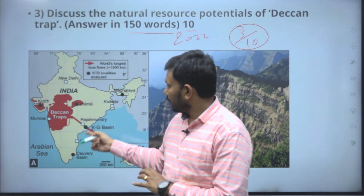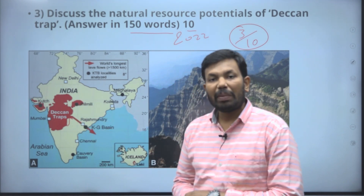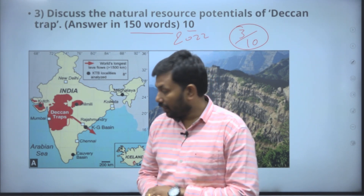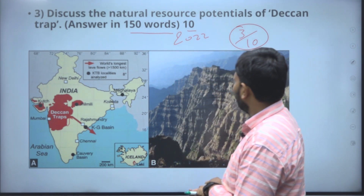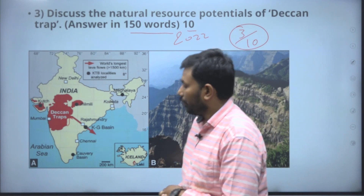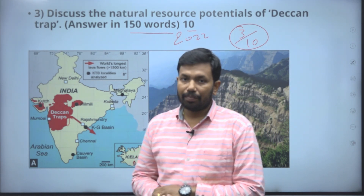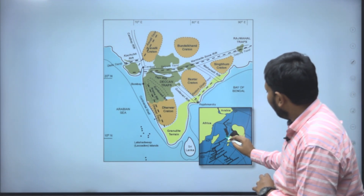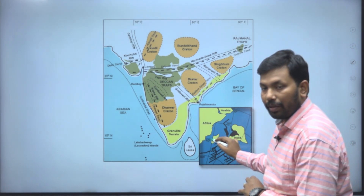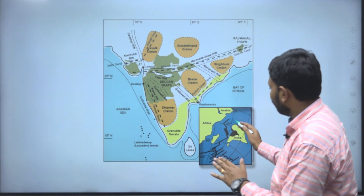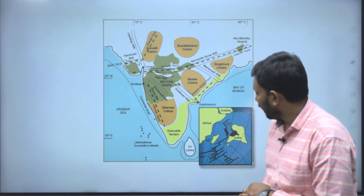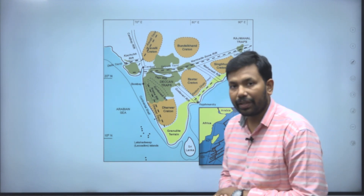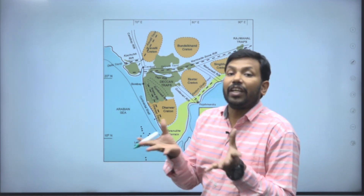You should draw a diagram because Deccan Trap and Deccan Plateau are different — you need to know what Deccan Trap is and where it is confined. You can also show a picture of the Indian plate: when the Indian plate separated from the African plate, a rupture occurred which led to fissure eruption.